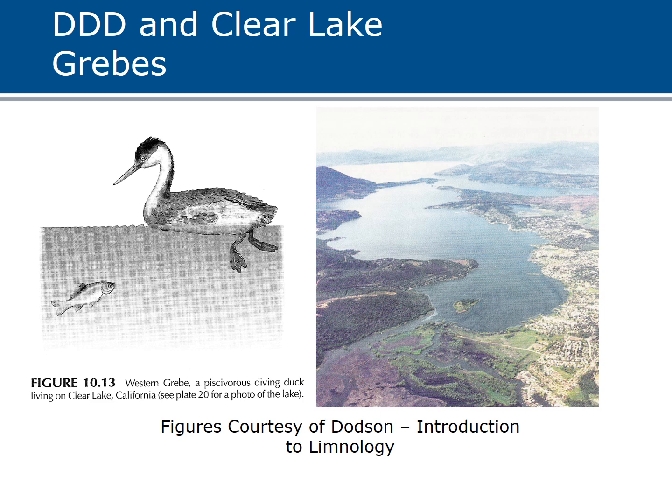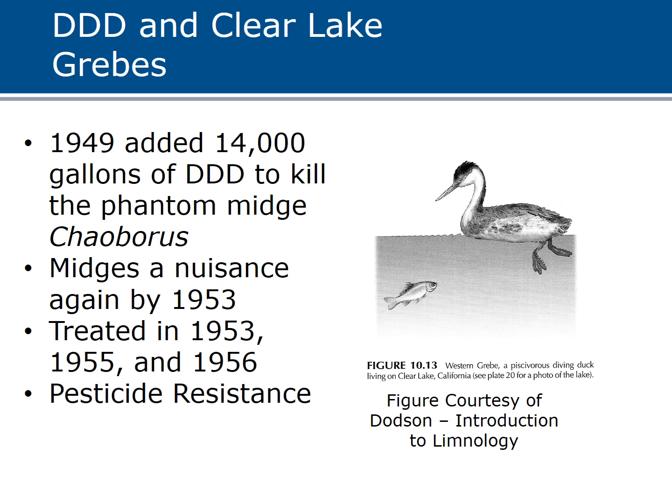A couple of case studies. Clear Lake is the largest natural lake completely within California, located north of the Bay Area. They had a problem with large numbers of midge larvae that would come in clouds at night, bothering nearby residents. So in 1949, they released 14,000 gallons of a chemical called DDD to kill the Phantom midge. But four years later, the midges were a nuisance again. When they treated it again, pesticide resistance had developed — only the organisms resistant to that level of DDD had survived.